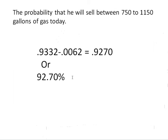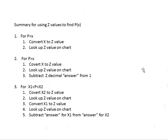To summarize what we've done so far for using z values to find a probability of x: First, we looked at the probability of less than x, which was simple. Convert your x value to a z value, look it up on the chart, and there's your answer.